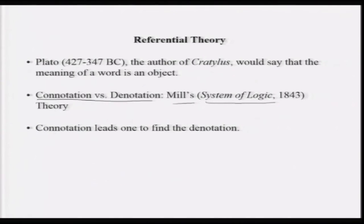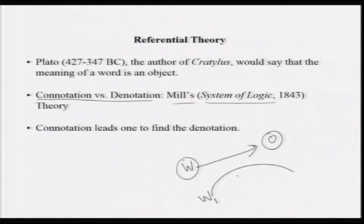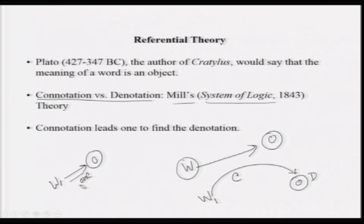This referential theory's main point is: there is a word, and the meaning of that word is directly an object. The modified version adds: through the connotation of a word it chooses an object as a denotation, or sometimes it directly chooses an object — those are the non-connotative types, like proper nouns. This is roughly the referential theory — these are just very rough ideas.